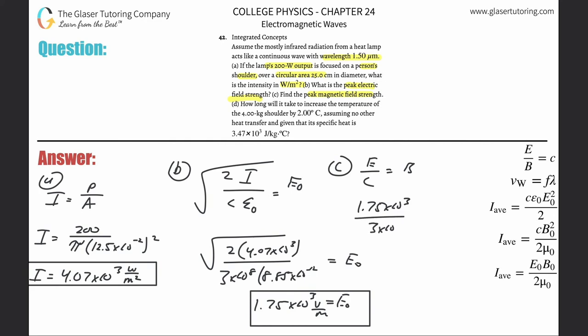Take that electric field we just found, 1.75 times 10 to the third, divided by the speed of light, 3 times 10 to the 8. That's equal to B. Take that value divided by 3 times 10 to the 8, and it's 5.84 times 10 to the minus 6, and that's magnetic field strength in tesla.